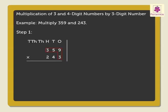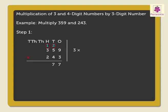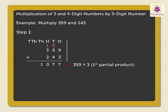Step 1: Multiply 359 by the ones digit of the multiplier, that is 3. 9 into 3 is equal to 27. 5 into 3 is equal to 15, plus the carried over 2, is equal to 17. Now, 3 into 3 is equal to 9, plus the carried over 1, which is equal to 10. We will call 1077 as the first partial product.